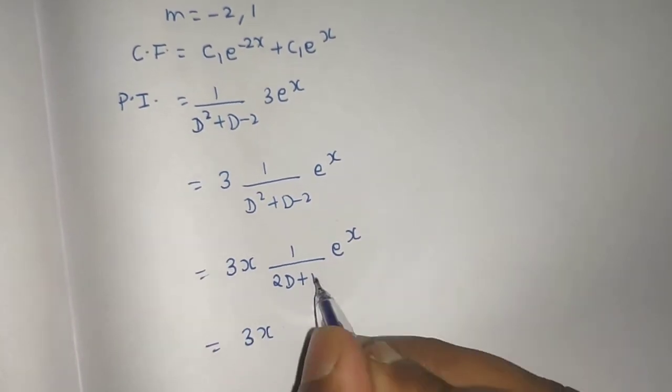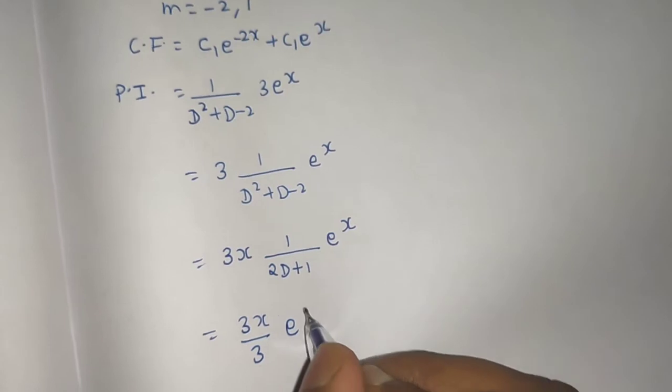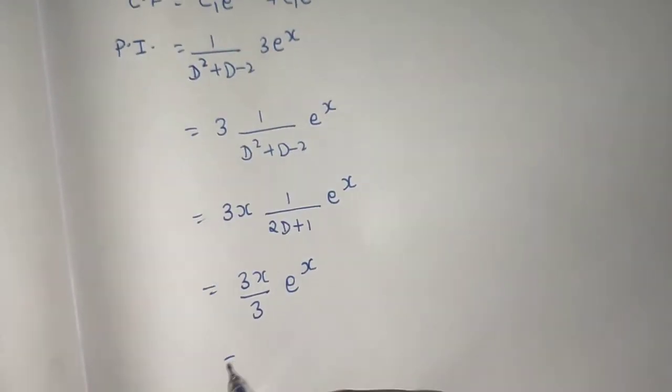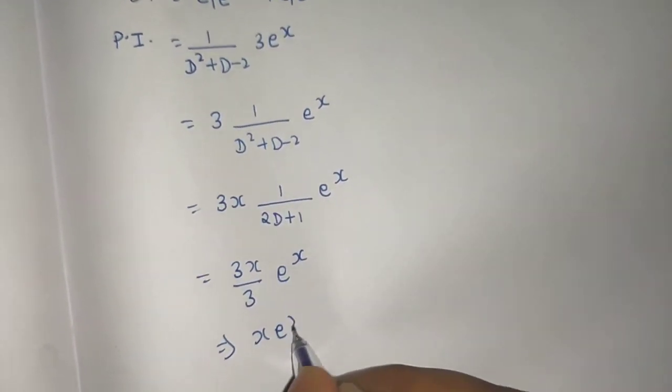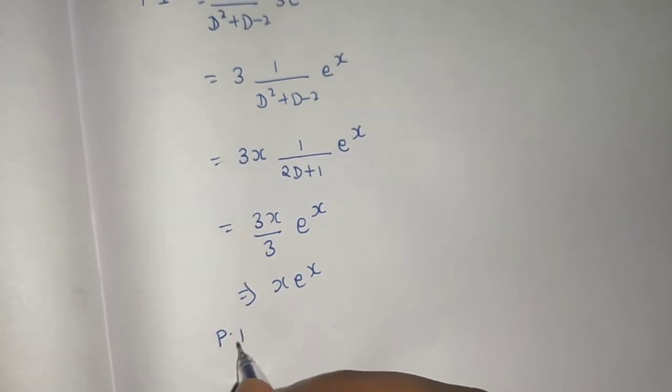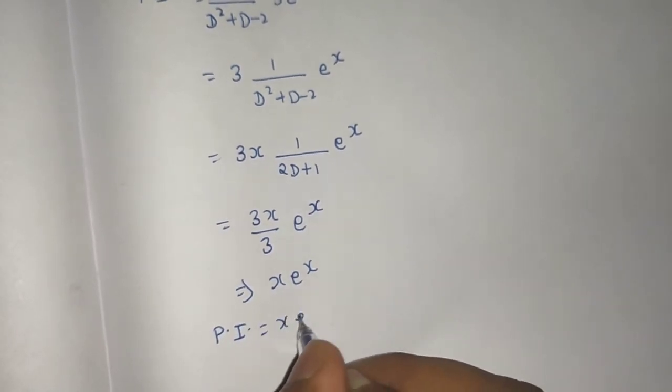3 x this 3 comes here and e power x. x e power x is what you are getting. Your particular integral is x e power x.